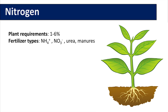Once nitrogen is in the plant, it is very mobile. If there are high amounts of ammonium present, it can reduce potassium, calcium, and magnesium uptake. If nitrate is the predominant nitrogen source and is present in high enough concentrations, it can also reduce phosphorus and sulfur uptake.